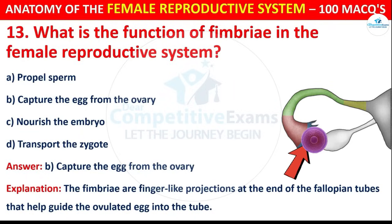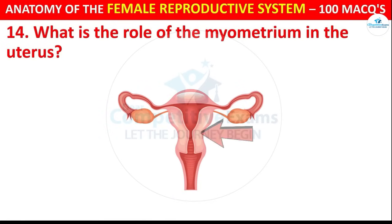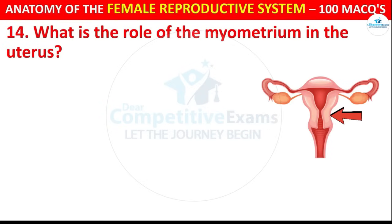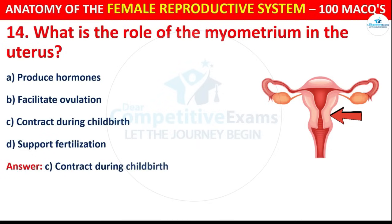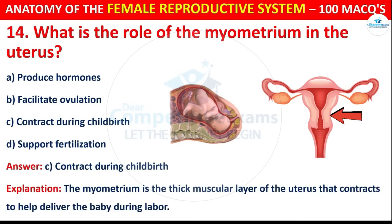Question number 14: What is the role of the myometrium in the uterus? Options are: Produce hormones, Facilitate ovulation, or Contract during childbirth. The correct answer is C, i.e. contract during childbirth. The myometrium is the thick muscular layer of the uterus that contracts to help deliver the baby during labor.